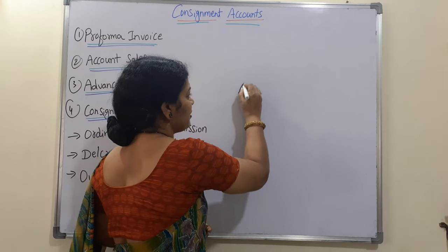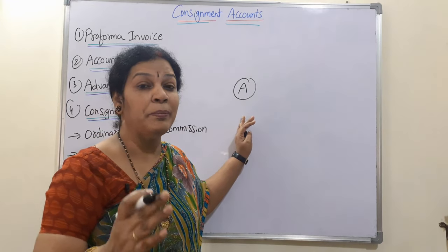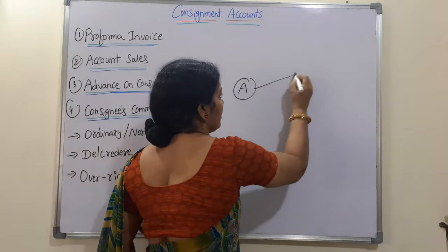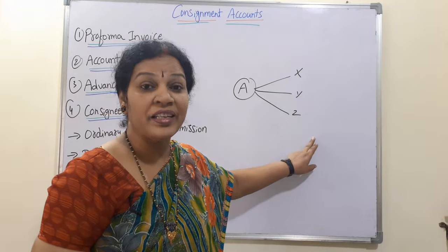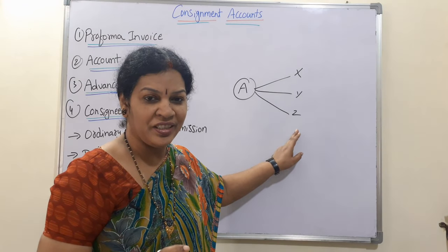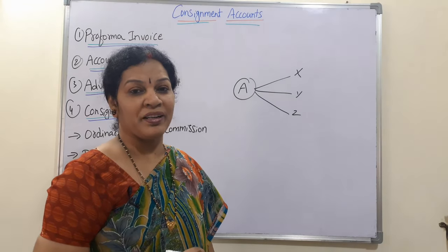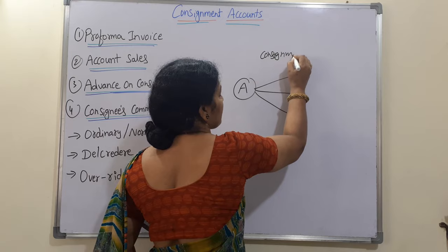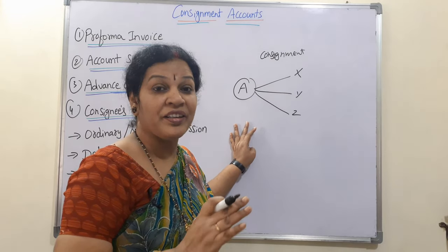For example, suppose A is a merchant or businessman who wants to sell goods in many places but cannot go to all places himself. So he consults some agents — say X, Y, Z. He is sending the goods to X, Y, Z. X, Y, Z are going to sell the goods of A and return the money back. This process we call consignment.